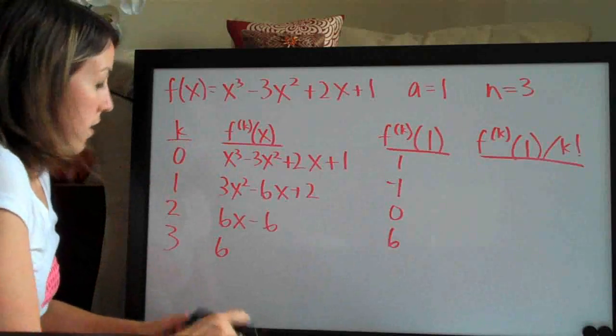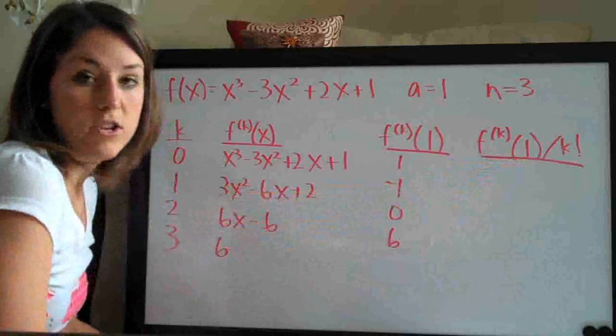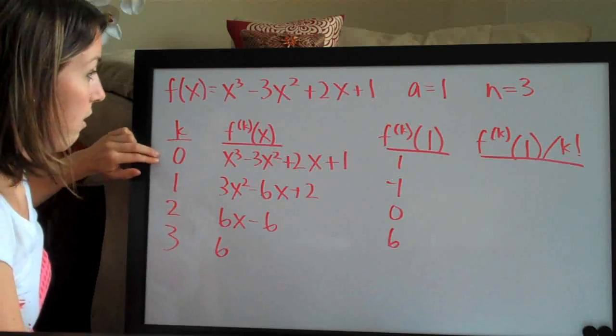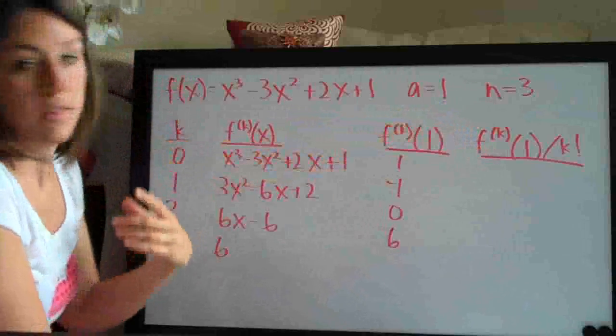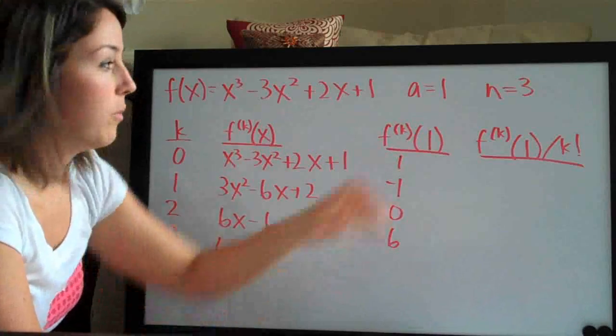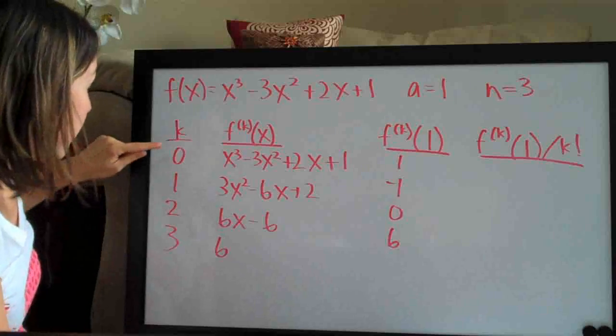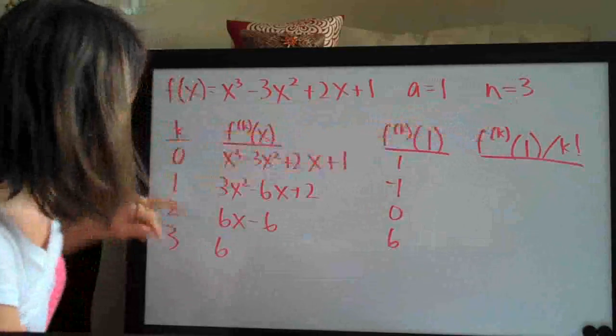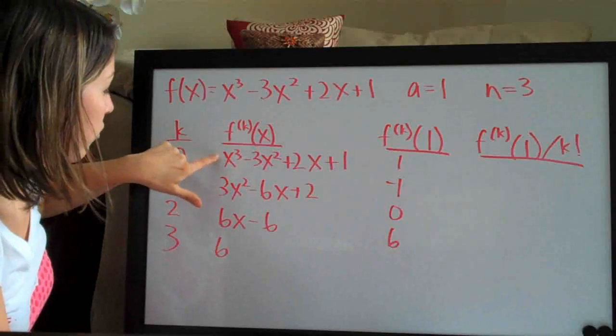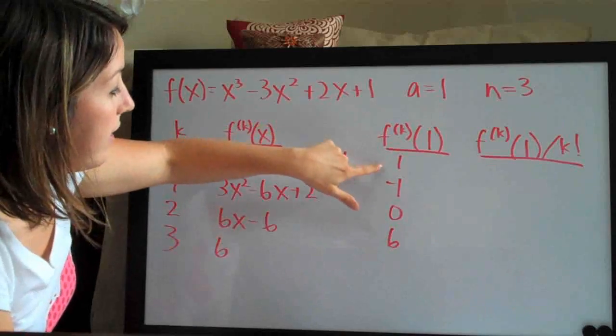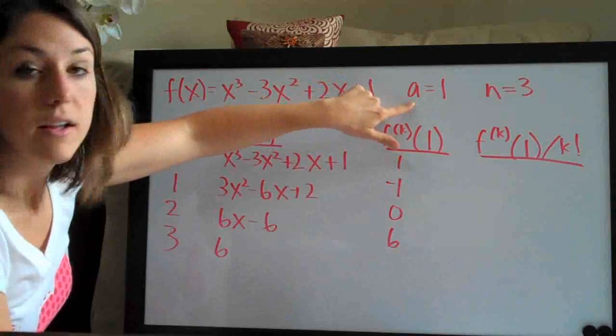So you can see that this first part here is the same as this and then here's k. I know that this may look like a lot of fancy terminology but basically you just write down 0 and then whatever n is. You always start with 0. In this case we number to 3. You write the original function and then take the derivative each time.